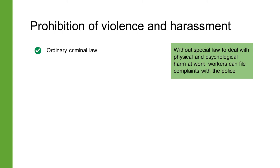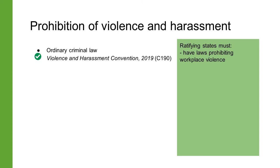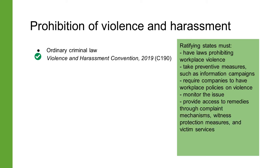Other than completely prohibiting forced or compulsory labor, labor laws also prohibit violence at work, including gendered violence and harassment. India does not have a special law to deal with physical and psychological harm at work; workers can file complaints with the police under ordinary criminal law. Under the Violence and Harassment Convention of 2019, which is Convention 190 of the ILO, ratifying states are required to develop national laws prohibiting workplace violence, take preventive measures, monitor the issue, provide access to remedies through complaint mechanisms, witness protection and victim services, and protect victims and whistleblowers from retaliation. India has not ratified this convention.